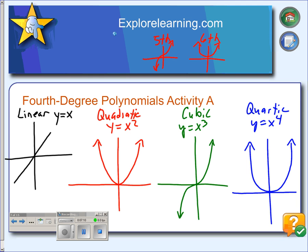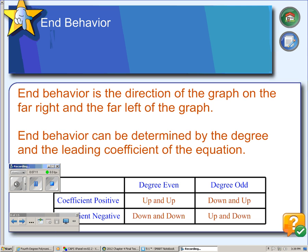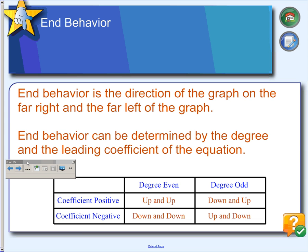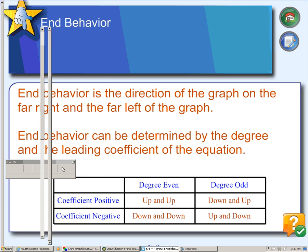And so there's a pattern with this. So here's a table that summarizes the pattern to the end behavior. The end behavior of a polynomial can be determined based on the leading coefficient and the degree. So copy down this table and then we'll do a couple of examples.